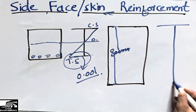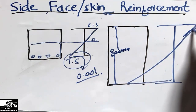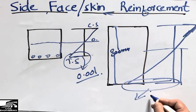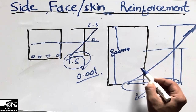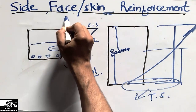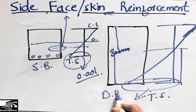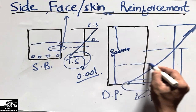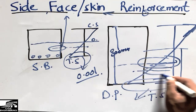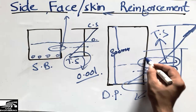In a deep beam, the strain diagram changes — it has more strain overall. At the side face of the beam, the tensile strain becomes significant. We want to ensure that the tensile strain at the side face does not exceed the allowable limit, so we place reinforcement there to control it.